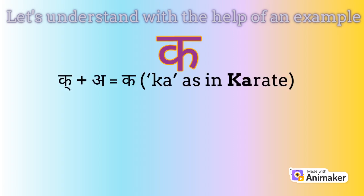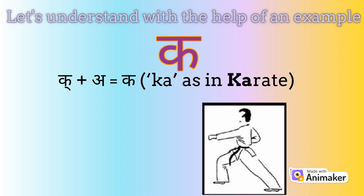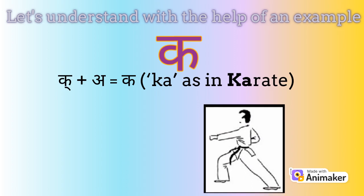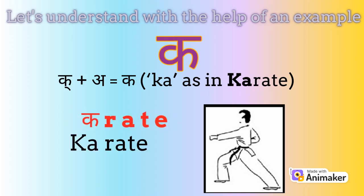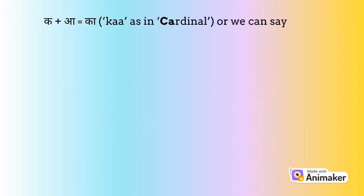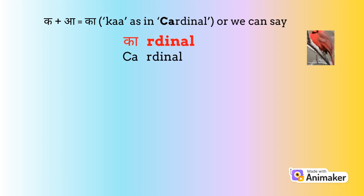When the Swara 'aa' is added to the consonant ka, it becomes 'kaa', as in the ka of karate. For ease of understanding, we can replace the ka of karate with the Hindi letter ka and keep the r-a-t-e the same, which would still mean karate. The letter ka plus 'aa' becomes 'kaa' as in karate.